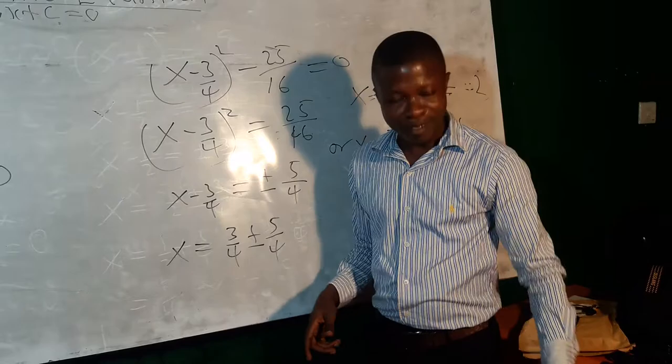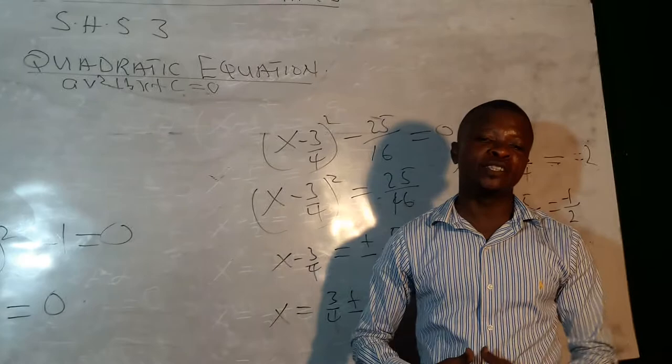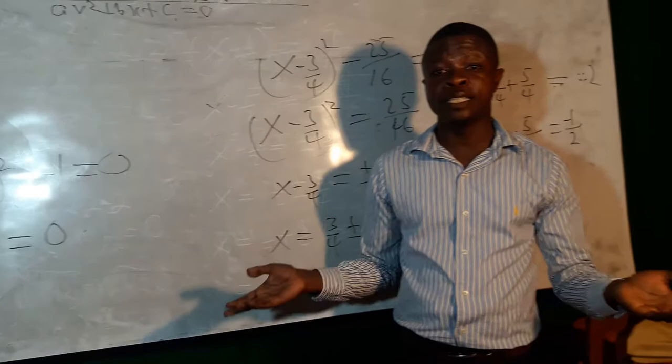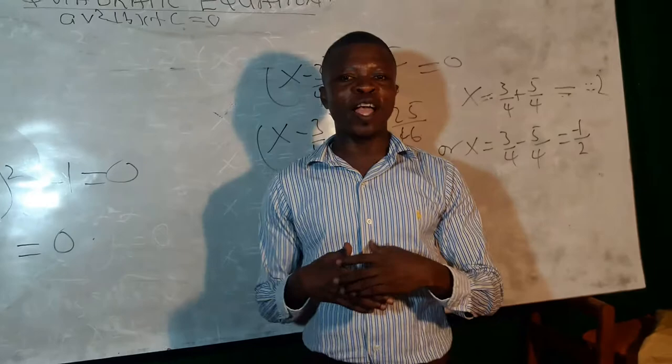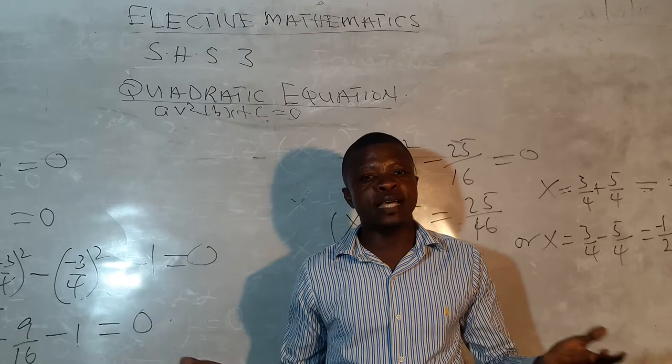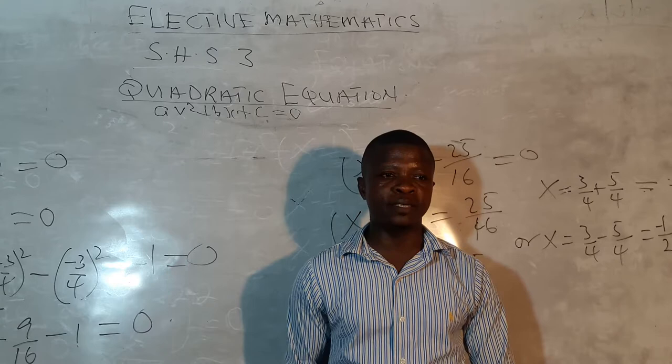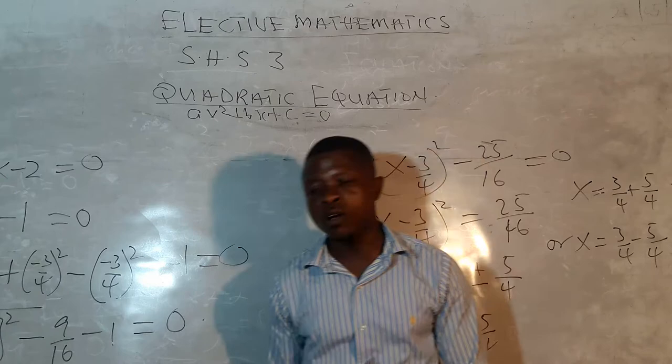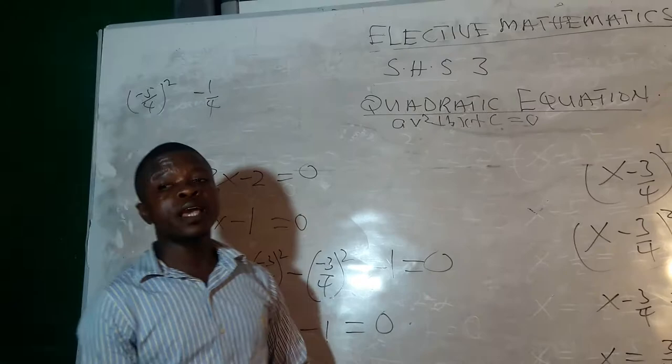So that is the method of completing the squares. We've learned that we can use the factorization method to solve quadratic equations, but it cannot be used to solve every quadratic equation. So there is a need to learn the method of completing the squares, which expresses the quadratic expression ax squared plus bx plus c as a perfect square.